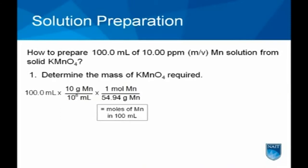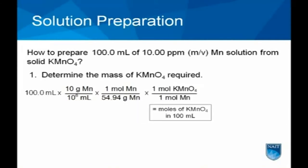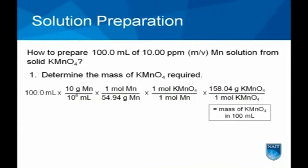The first step is to determine the required mass of manganese in the final solution. From this value, calculate the moles of manganese, the moles of potassium permanganate, and then finally the mass of potassium permanganate required for preparing 100 milliliters of solution.